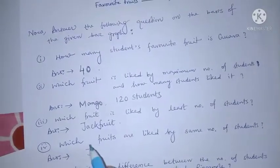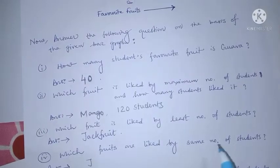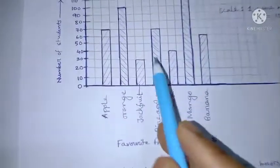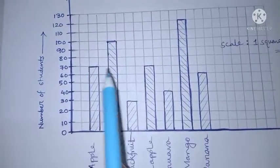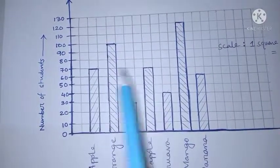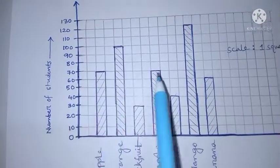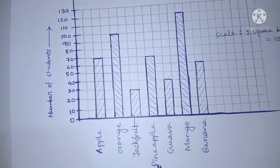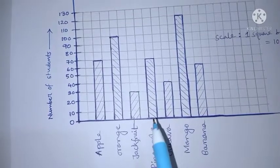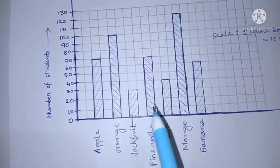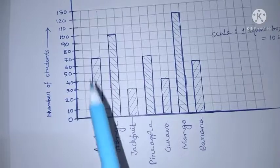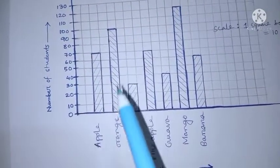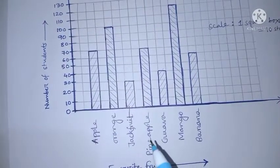Which fruits are liked by the same number of students? We have to find bars of the same height — 70. Apple is liked by 70 students and pineapple is also liked by 70 students. Answer: apple and pineapple.